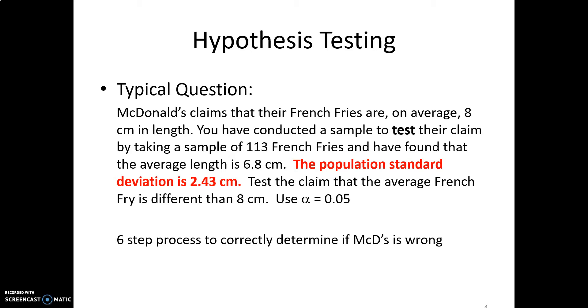The population standard deviation is given to us. So it's 2.43 centimeters. Remember, if we have the population standard deviation, we can use normal distribution and apply a Z value to it. If we did not know the population standard deviation, we'd then have to calculate our own standard deviation from the sample. At that point, we could not use a Z value. We'd have to use a T value.